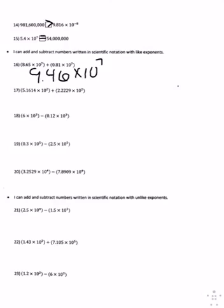Number seventeen, the exponents are the same, so you add 5.1614 plus 2.2229, and you get 7.3843 times 10 to the 2nd.